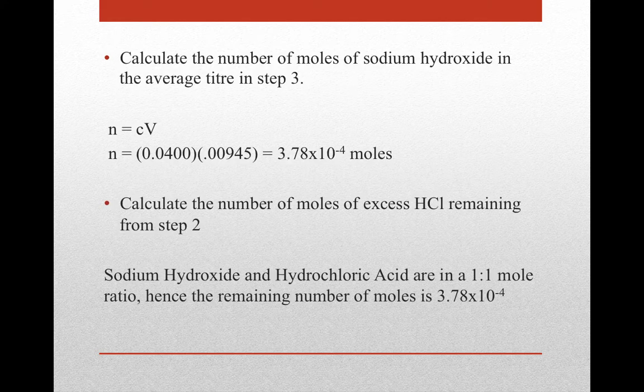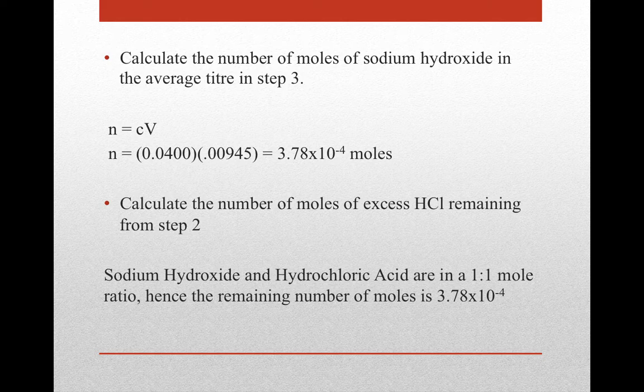The first question asks us to calculate the number of moles of sodium hydroxide in the average titer in step 3. We're working backwards, starting at step 3, to find how much hydrochloric acid was present in step 3 and step 2. We know our sodium hydroxide concentration and volume, both given in step 3, so we plug them into the equation N = CV.